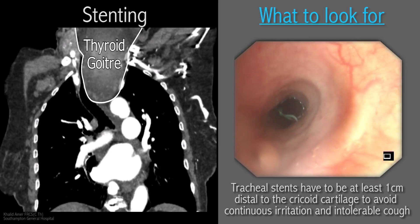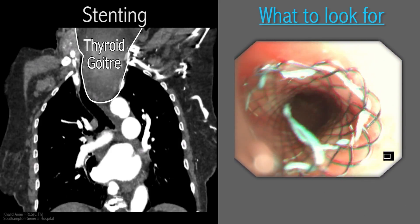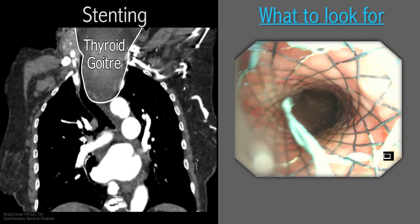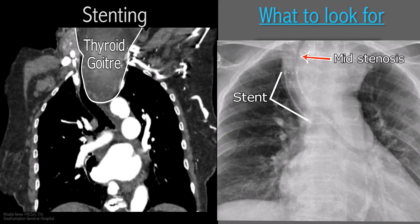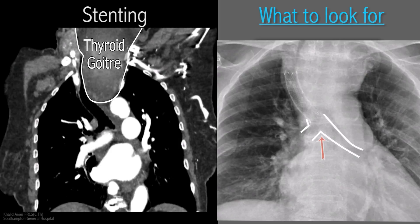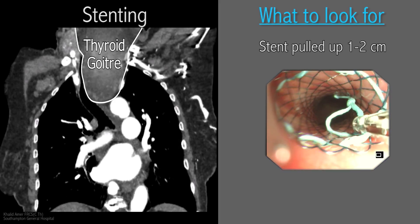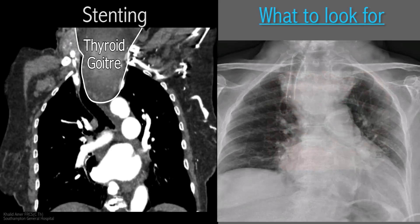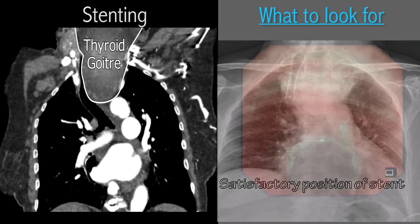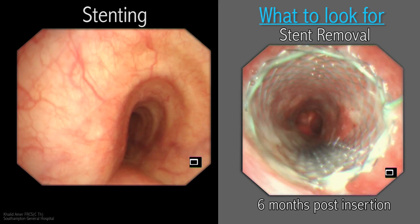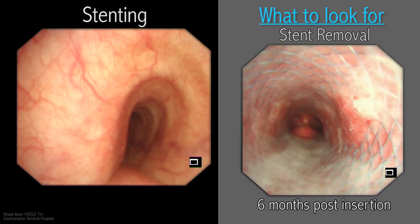These stents are easy to insert under direct vision without the need for a C-arm or a hybrid theatre. Self-expanding metal stents continue to expand up to 48 hours after their launching. Our patient had a chest X-ray in the recovery room to confirm position of the stent; unfortunately the stent did not cover the point of maximal stenosis. She was returned to theatre, the stent was pulled out approximately 1 cm, and a second X-ray revealed a satisfactory position. S90 and all metal stents can easily be removed up to a year after their insertion, which may arise if the tumour responds well to radiotherapy or alternative treatment.